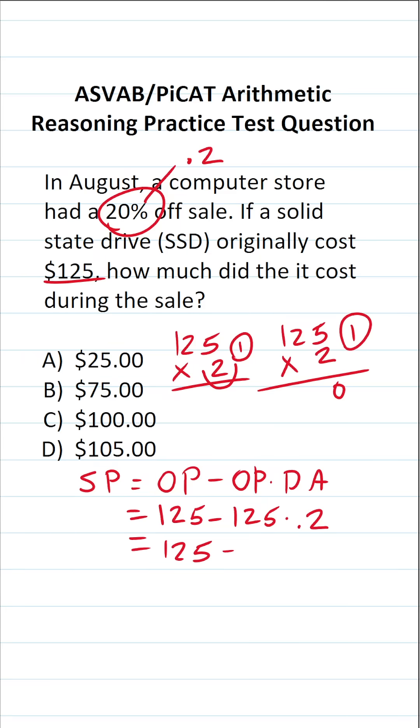5 times 2 is 10, carry a 1. 2 times 2 is 4, plus 1 is 5. 1 times 2 is 2. Bring in our one decimal. So 125 times 0.2, as you just saw, is 25.